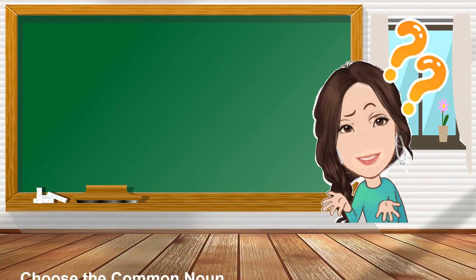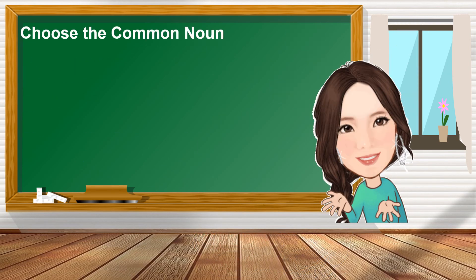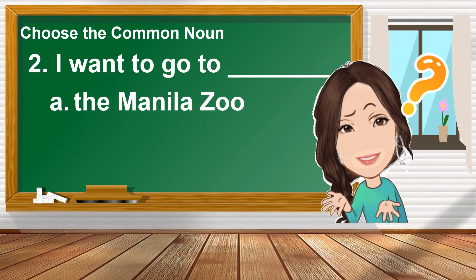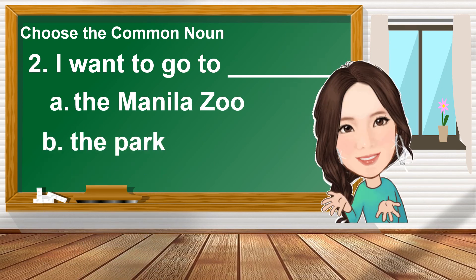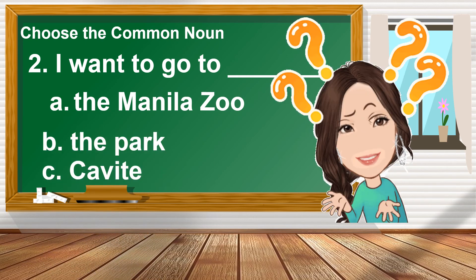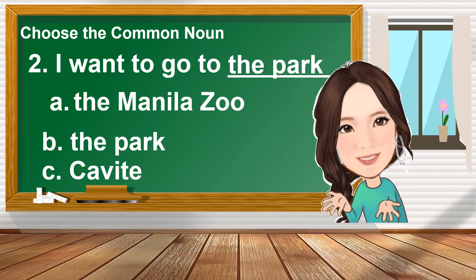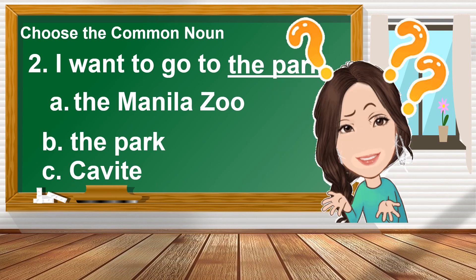Number two: choose the common noun. I want to go to blank. A. The Manila Zoo. B. The Park. C. Cavite. And the answer is letter B — the park.